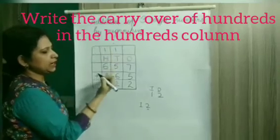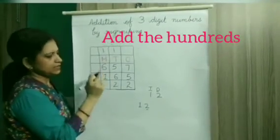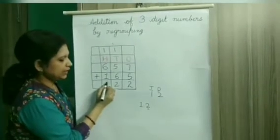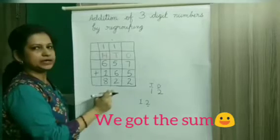Now let's add the hundredths. 1 plus 6 is 7. 7 plus 1 is 8. So we got the same stuff that is 822.